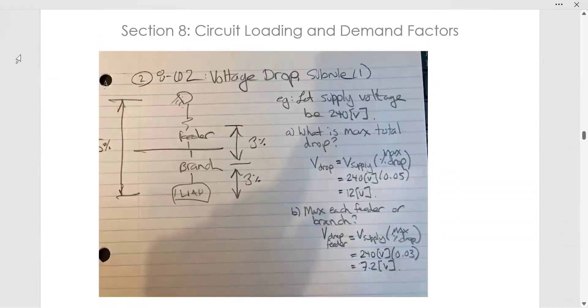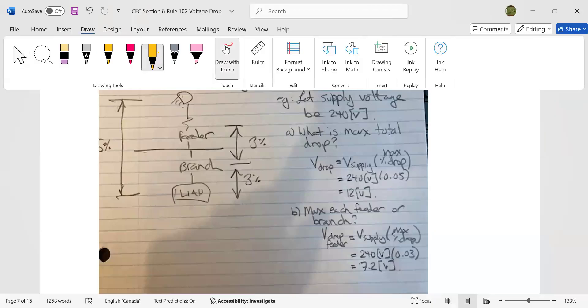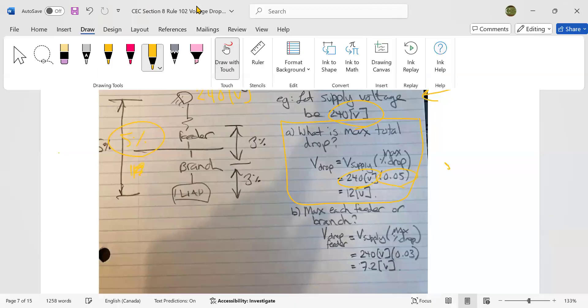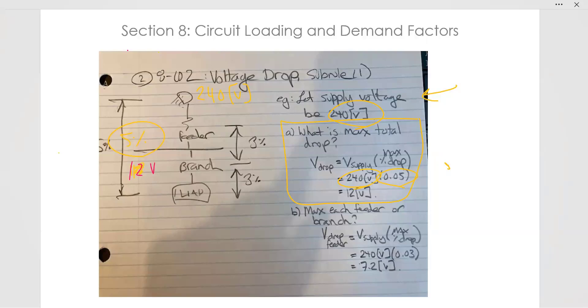Here's an example we can do about subrule one. So this is a voltage drop example for subrule one. So if the supply voltage is, this is a good question for any of the exams, so please study this. If the supply voltage is 240 volts, which means, here we go, we have 240 volts here, then what is the maximum total voltage drop that's allowed? Well, it is 5%. The maximum amount is 5% of that 240 volts. So it is simply 240 volts times 5%, which is 0.05 in a decimal form. So that is 12 volts. So the maximum amount that this can decrease across the conductor length is 12 volt drop.